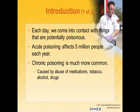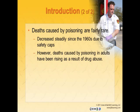Acute poisoning affects about 5 million children and adults each year, and chronic poisoning is a much more common issue. Generally, this is caused by abuse of medications, tobacco, alcohol, and drugs. Death rates by poisoning are fairly rare, and rates of death in children have decreased significantly since the 1960s due to safety caps on bottles. However, deaths caused by poisoning in adults have been on the rise, attributed to drug abuse.